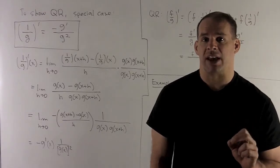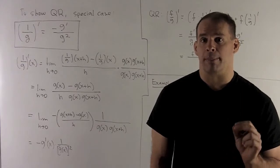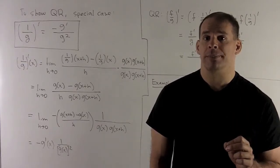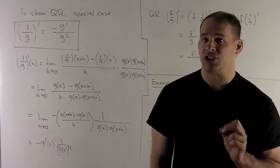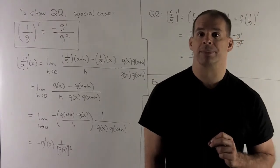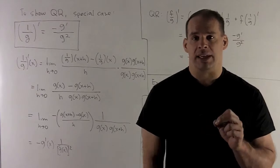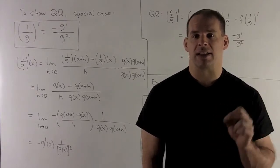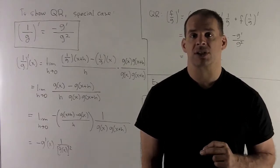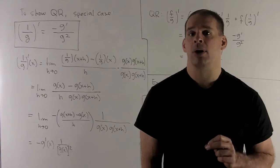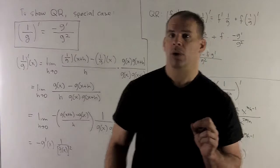Pulling out a minus sign, the numerator becomes -[g(x+h) - g(x)] / h, which goes to -g prime. The denominator has g(x), which stays as g(x) (treated as a constant), and g(x+h), which by continuity at x (since differentiability implies continuity) goes to g(x). So we wind up with -g prime over g squared, as promised.